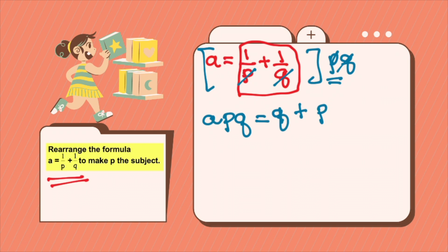After which we have to rearrange to get all the p's on one side of the formula. So to move this p to the left side, we have to subtract p on both ends. apq minus p equals q plus p minus p. So you have apq minus p equals q.